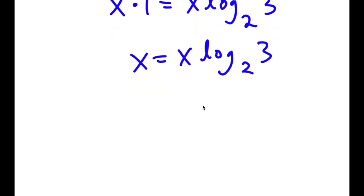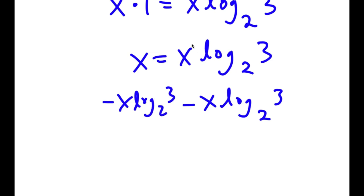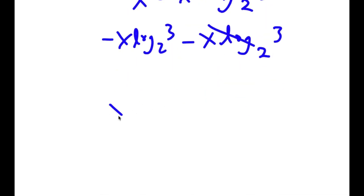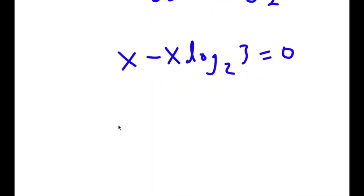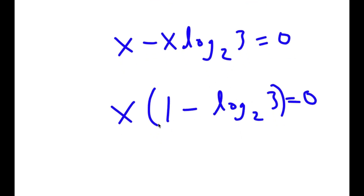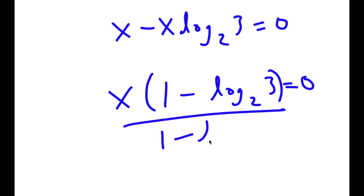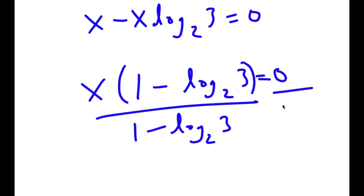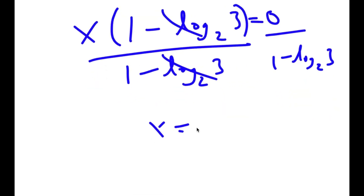Now I'm going to subtract x log base 2 of 3 from both sides. When these cancel out, I get x minus x times log base 2 of 3 is equal to 0. If I factor out x, I get x times 1 minus log base 2 of 3 is equal to 0. And if I divide both sides by 1 minus log base 2 of 3, these two cancel out, and I'm left with x is equal to 0.